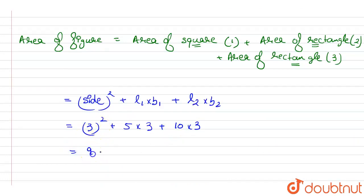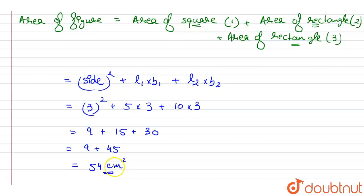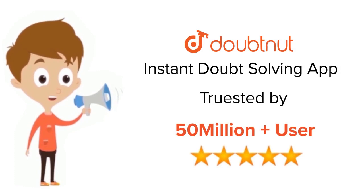So 3² equals 9, plus 5 × 3 equals 15, plus 10 × 3 equals 30. That gives us 9 + 15 + 30 = 54 cm². The area is 54 centimeters squared. For class 6 to 12, IIT JEE and NEET level — trusted by more than 5 crore students. Download DoubtNet today.